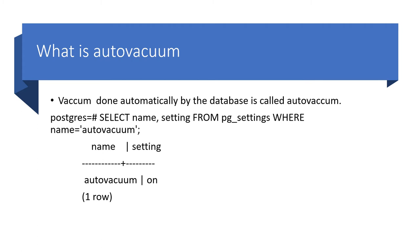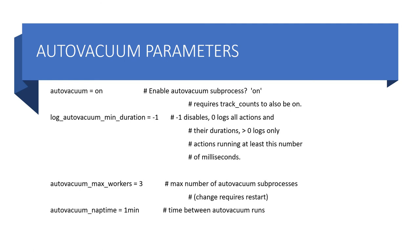PostgreSQL came up with a process called auto vacuum. Instead of doing vacuum manually, PostgreSQL will do it on your behalf. By default, vacuuming and analyzing happen automatically at the database level — auto vacuum is on by default. In postgresql.conf, if you check auto_vacuum, it should be set to on, meaning auto vacuuming is working.